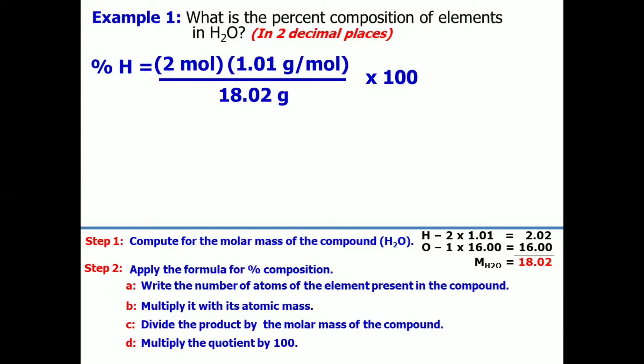You may pause the video, get your calculator, and apply the following operation. And the answer is... You got it right. Hydrogen is equal to 11.21%.